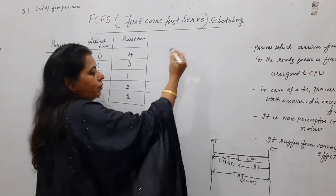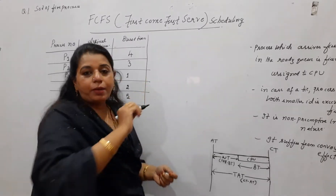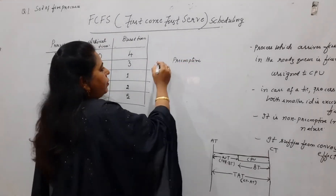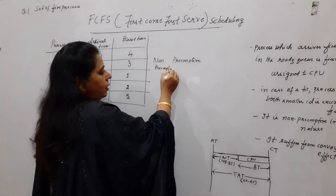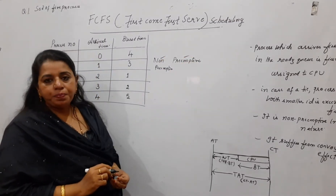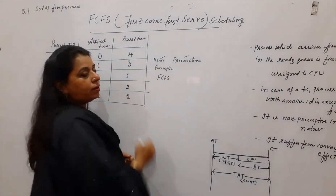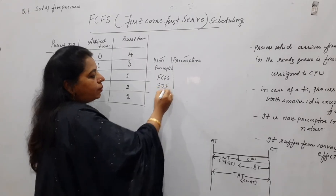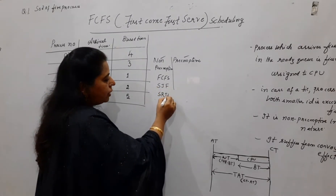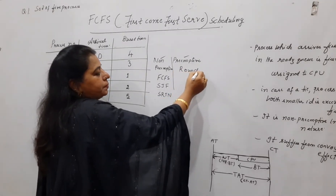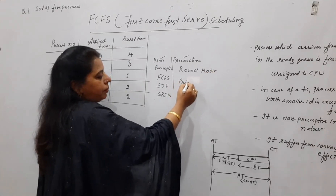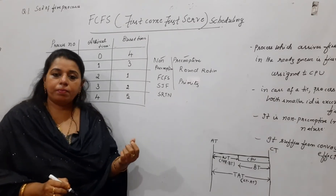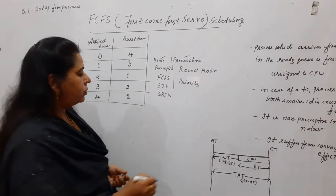From the previous two sessions I have been telling you that scheduling can be preemptive and non-preemptive. Under each of these categories you have different algorithms. FCFS is non-preemptive. In future sessions you will be learning about different algorithms — like Shortest Job First and Shortest Remaining Time Next in non-preemptive, and Round-Robin and Priority Scheduling in preemptive. Priority scheduling is of both types: preemptive priority and non-preemptive priority.